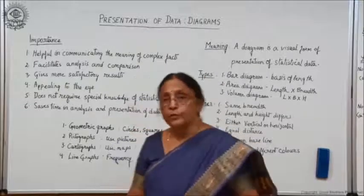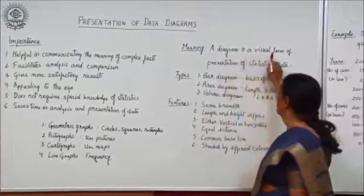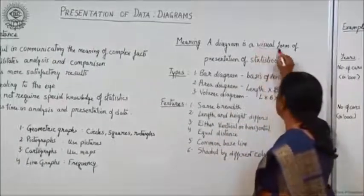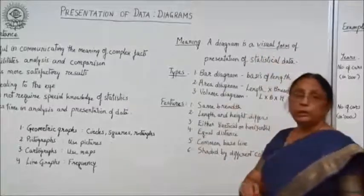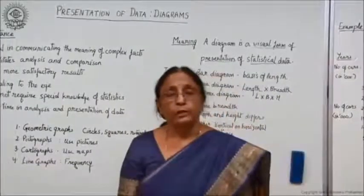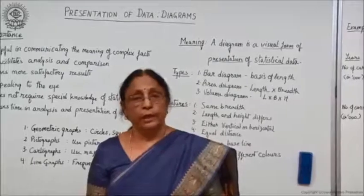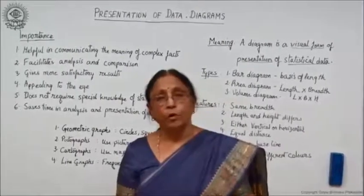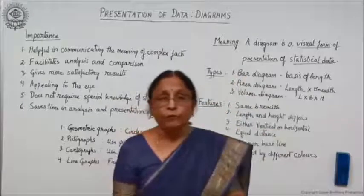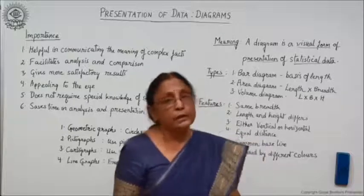Now let us look at the meaning of diagram. A diagram is a visual form of presentation of statistical data. Through a diagram, you can immediately visualize what the data is showing. When the diagram gives the data, it becomes more attractive also. So the meaning of diagram is: it is a visual form of presentation of statistical data in an attractive manner. This is the meaning of diagrammatic presentation.